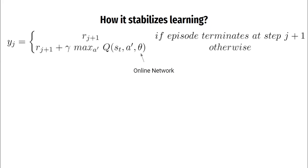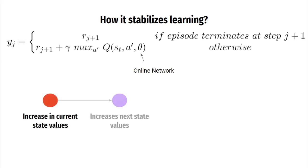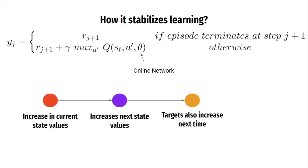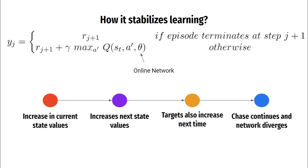If we had just used the online network to generate targets for updates, an increase in the values of current states could potentially increase the values of next states too. In the next update the target would also be increased, and the network would again chase this increased target — leading to oscillations and possible divergence. That's why we generate targets from the target network: it is a slow copy, so an update to current states does not immediately update the values of next states, keeping learning stable and leading to better policies.